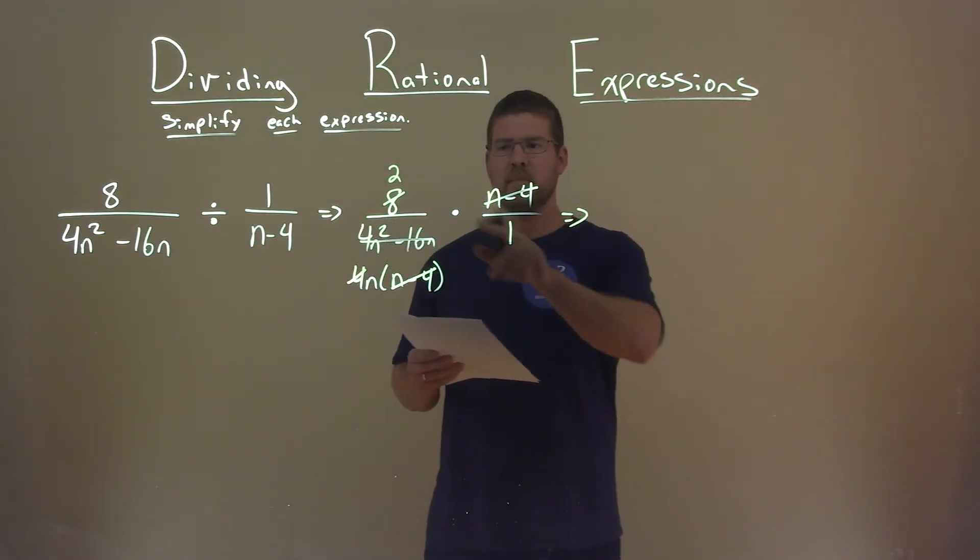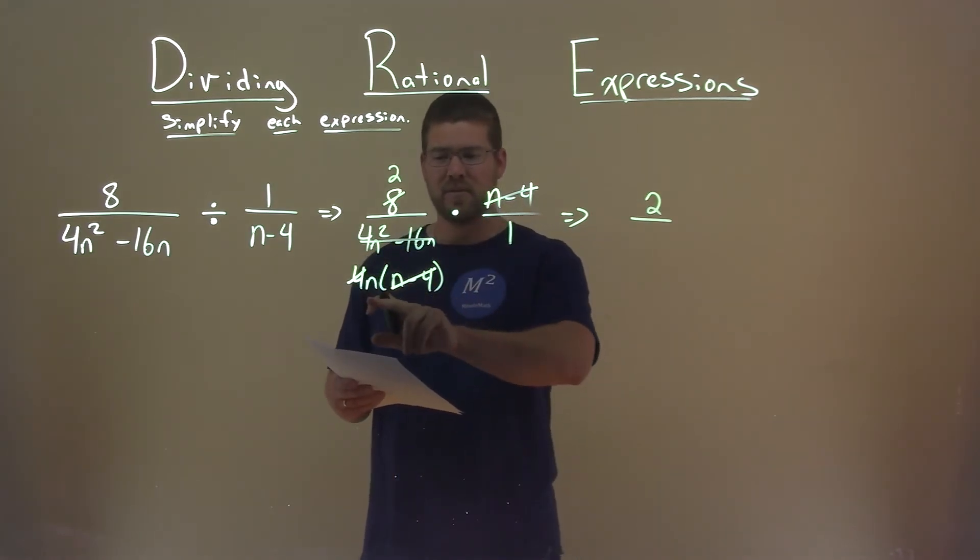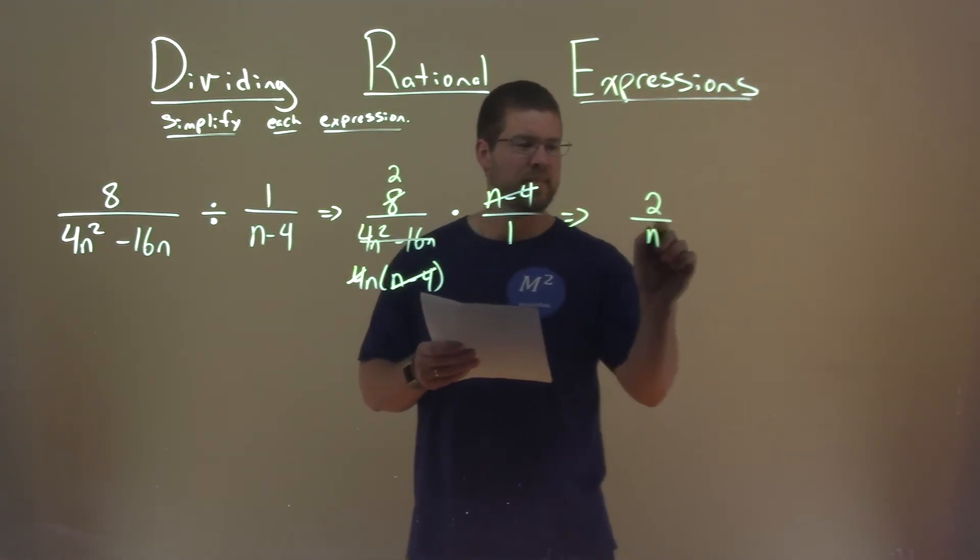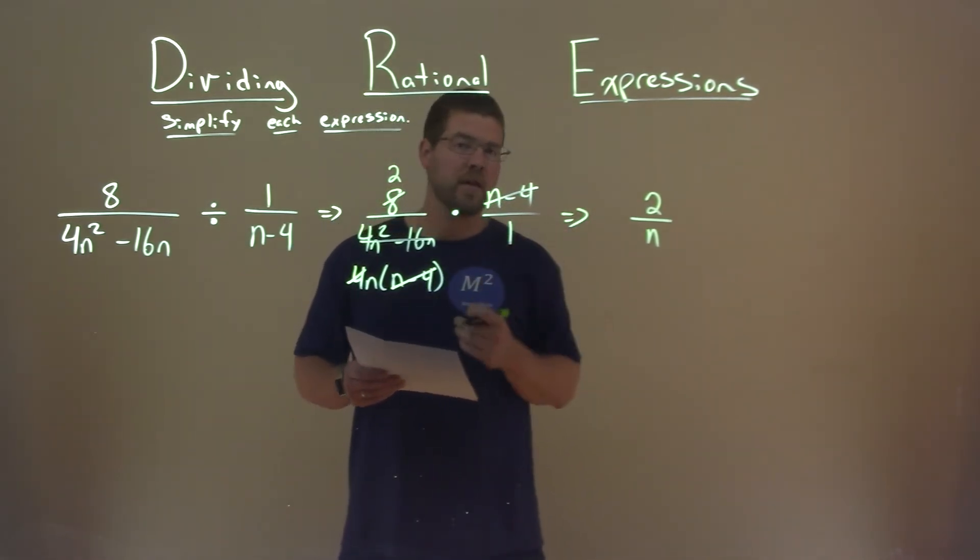So let's bring over what's left over. Numerator just has a 2. Denominator, well, everything really cancels, just n times 1, which is n. And there we have it. 2 divided by n is our final answer.